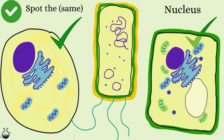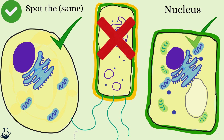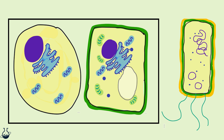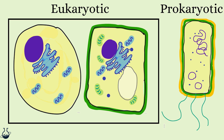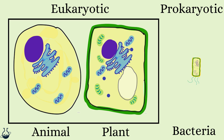However, you might notice that this genetic material is held within a nucleus for the animal and plant cells, but not for the bacteria — it kind of just floats in the cytoplasm as a loop of DNA. This allows us to create two categories of cells: eukaryotic cells on the left as one group, and prokaryotic cells as a separate group. Prokaryotic cells include bacteria, which are significantly smaller — about 10 times smaller than eukaryotic cells.